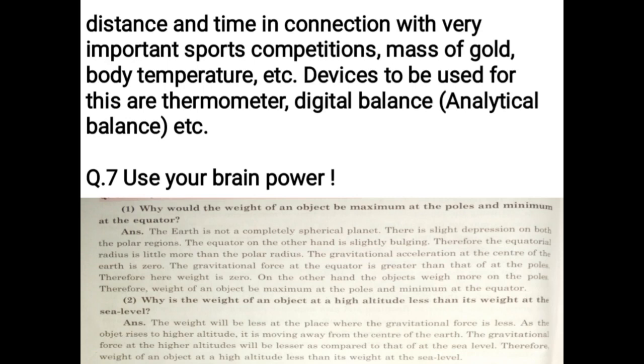the equatorial radius is little more than the polar radius. The gravitational acceleration at the center of the Earth is zero. The gravitational force at the equator is greater than that of at the poles. Therefore, your weight is zero. On the other hand, the objects weigh more on the poles. Therefore, weight of an object be maximum at the poles and minimum at the equator.